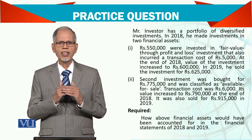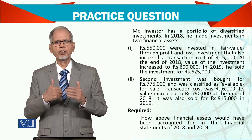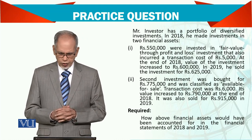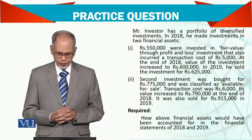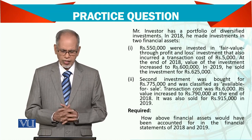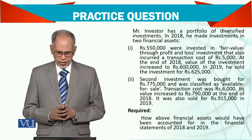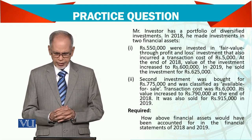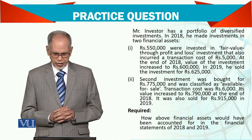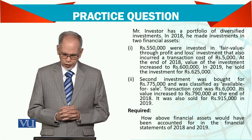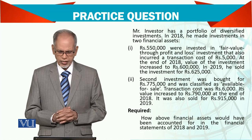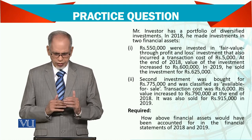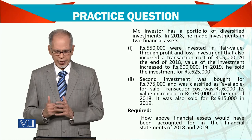For this investment, there is initial recognition, a change in value, and then disposal. The second investment was bought for 700,000 and was classified as available for sale. The transaction cost was 6,000, and the value increased to 790,000. It was then sold at 915,000 in 2019. So again, there is a change in price and a subsequent sale.